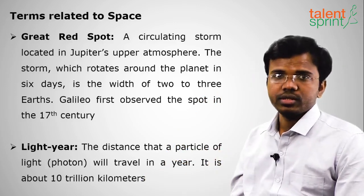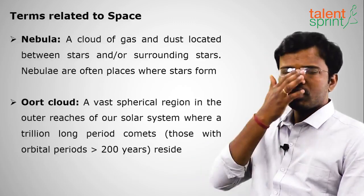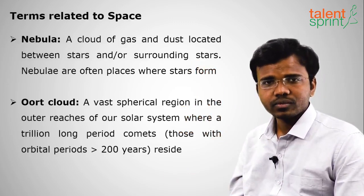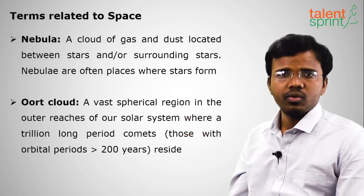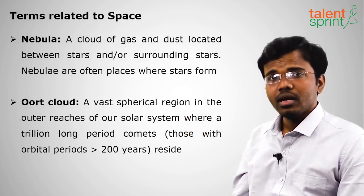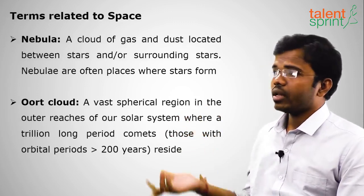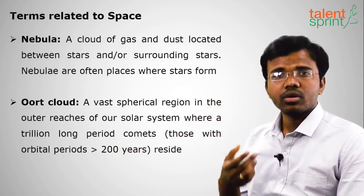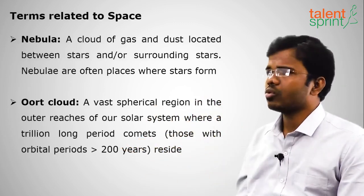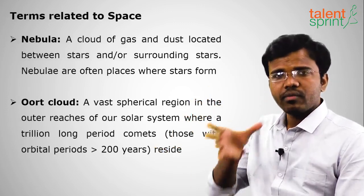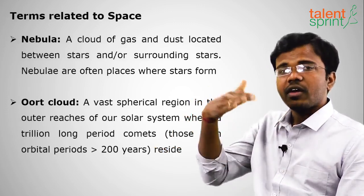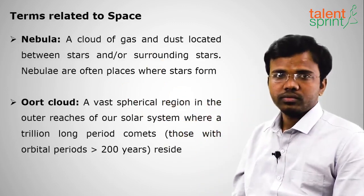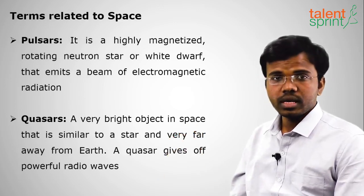A nebula is a cloud of gases and dust — stars form from nebulae. Hydrogen and helium are the main gases in a nebula. The Oort Cloud lies beyond the Kuiper Belt; long period comets (taking more than 200 years to orbit the sun) are mostly present in the Oort Cloud. So the structure is: eight planets, then the asteroid belt between Mars and Jupiter, then after Neptune the Kuiper Belt, then the Oort Cloud.